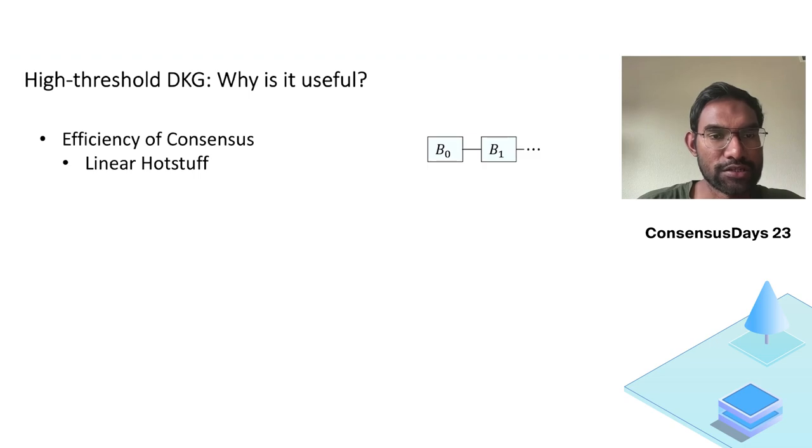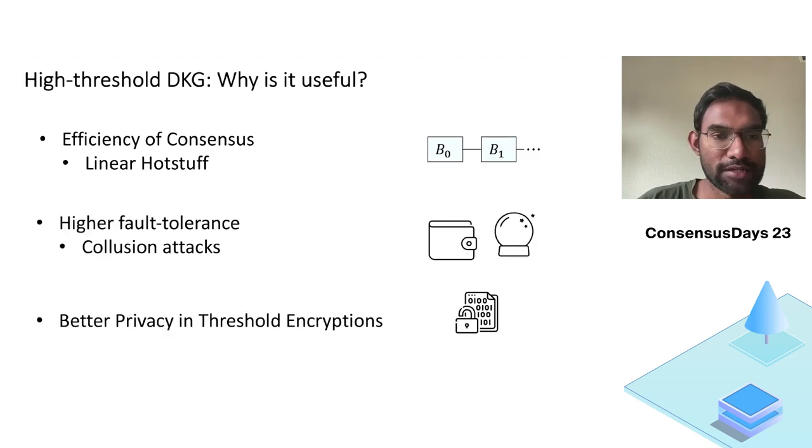So why are high threshold DKGs useful? It can give us more efficient consensus, it can give us higher fault tolerance, and also in terms of collusion attacks, it can give us better privacy in threshold encryptions.